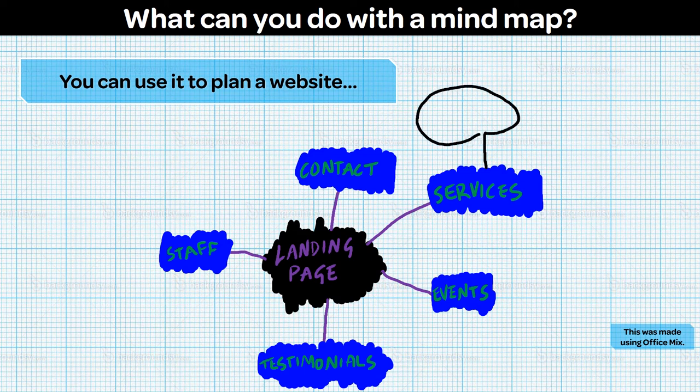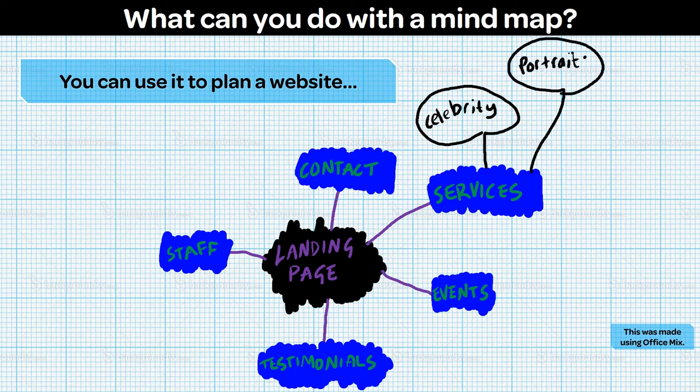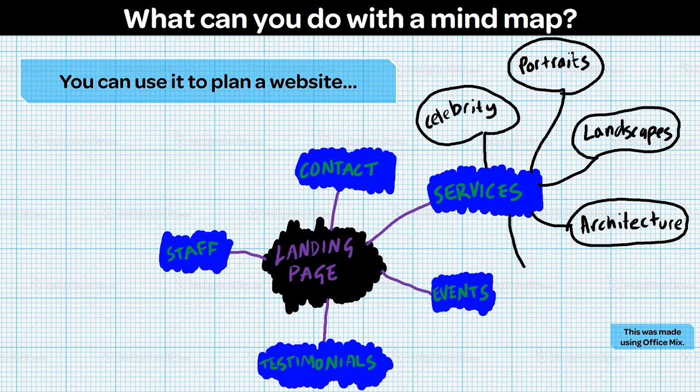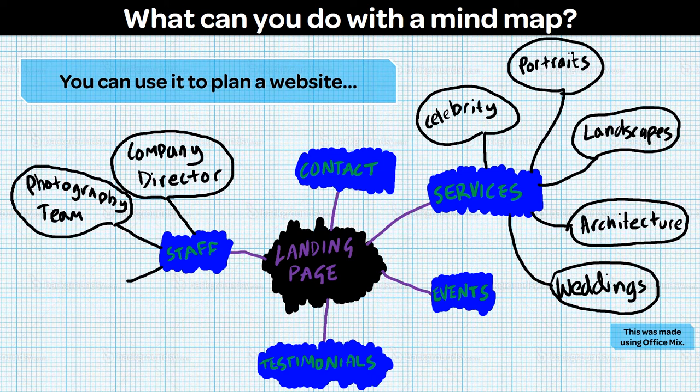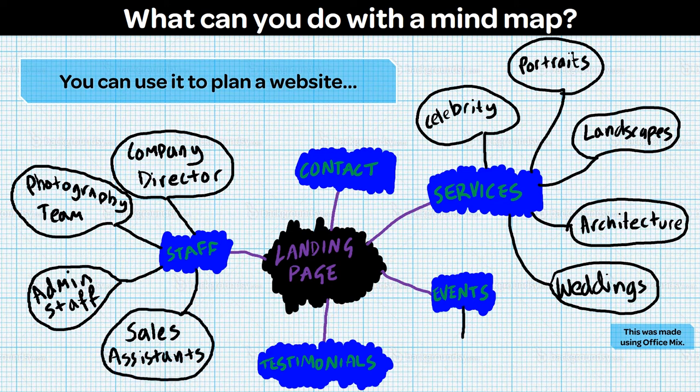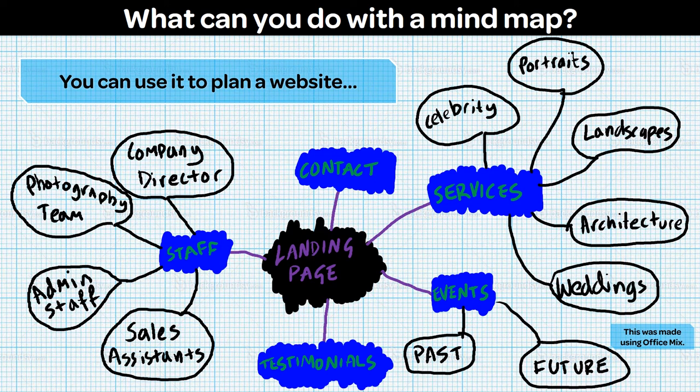So let's say I'm running a photography business. Perhaps I would have a page for celebrity photographs. So I can go to your event and take photography at your special event. I might have a page for portraits, family portraits. I might have a page for landscapes. Maybe I take landscapes and just sell the images. I would have a page for architecture so I can come along and photograph your building. And of course, I would have a page for wedding photography. Sub pages on my staff page would include a page for myself, the company director. A page showing off my photography team. A page for all my administrators. And a page for all the sales assistants. Once I have created my rough mind map, I can then go and hit the computer and create a more formal plan.